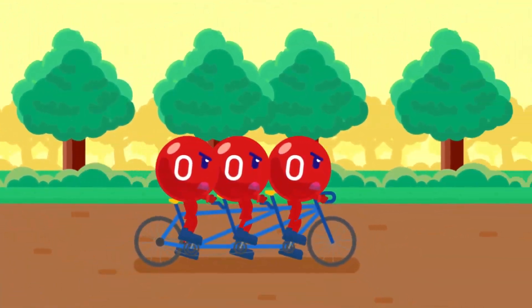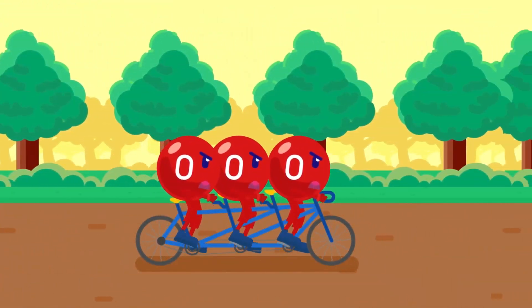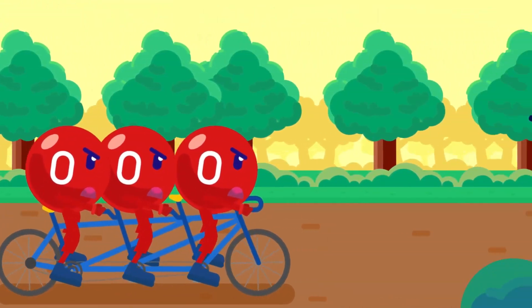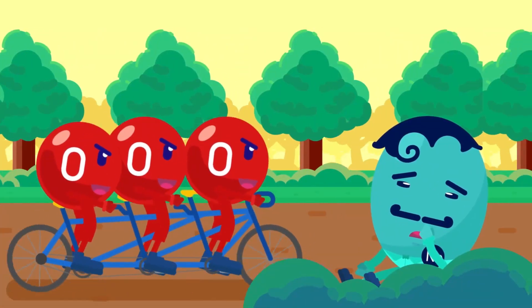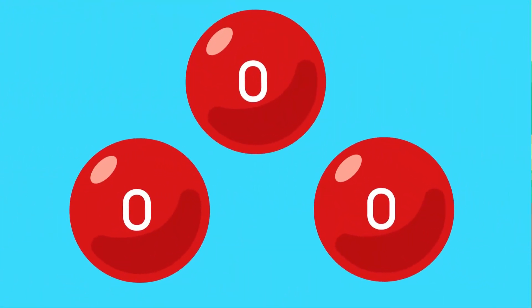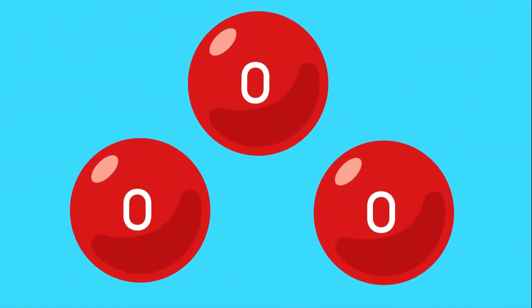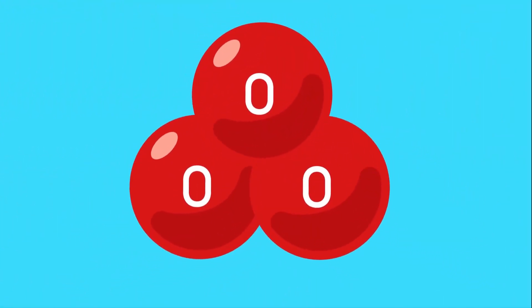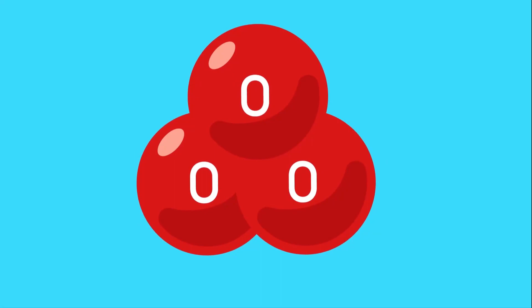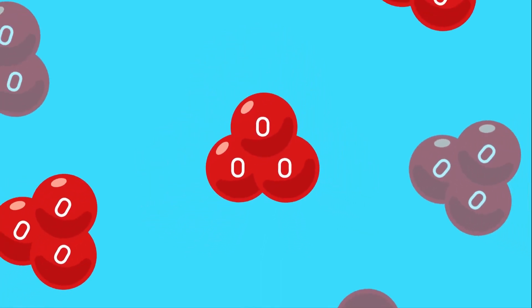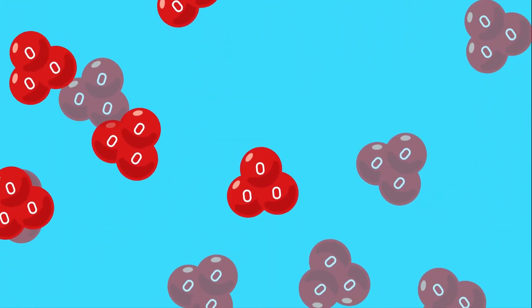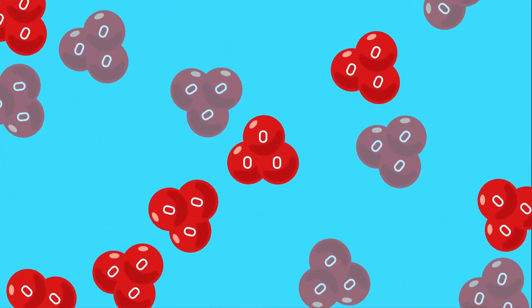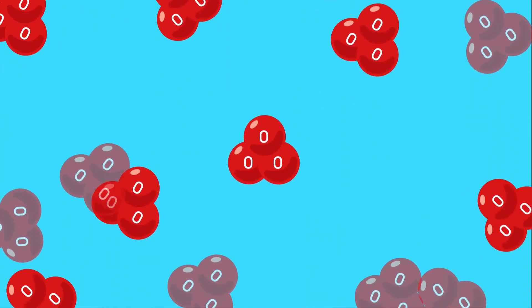Polyatomic meaning that the molecules are formed by the combination of three or more atoms. For example, an ozone molecule is formed by the combination of three oxygen atoms. This is how the ozone molecule is found in nature and can be denoted as O3.